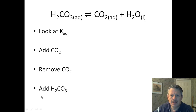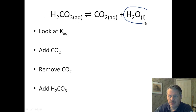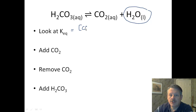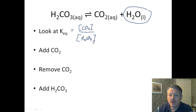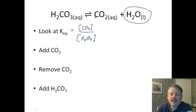Let's look at an example — our equilibrium constant for this reaction. This is a liquid, so we don't worry about it. We always do products over reactants with no coefficients. So our K-eq is going to be the concentration of CO₂ divided by the concentration of H₂CO₃. Let's surmise, for purposes of argument, that we have exactly the same amount on both sides, so our equilibrium constant is 1.